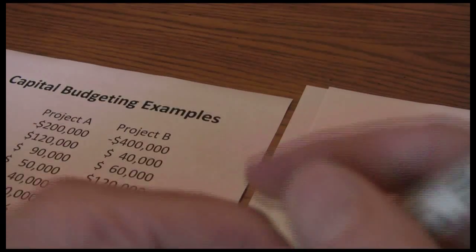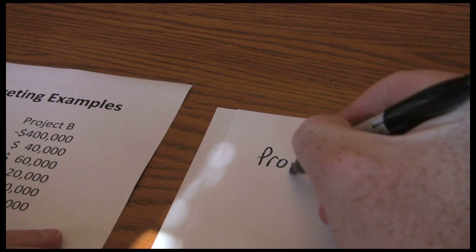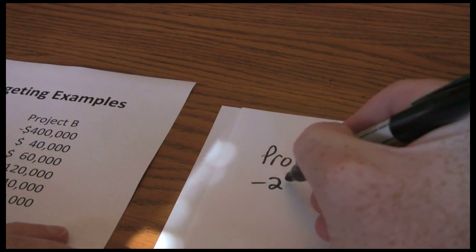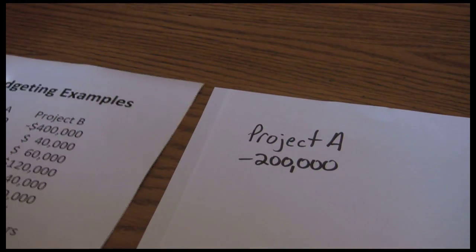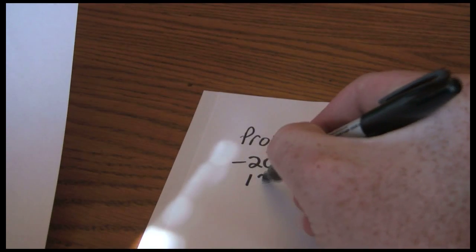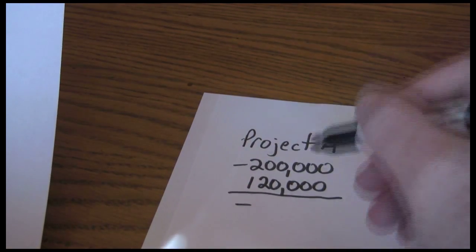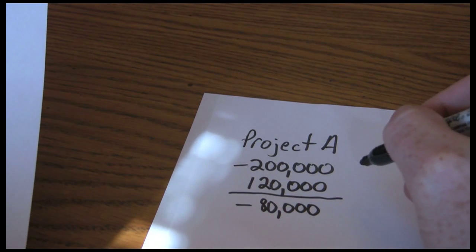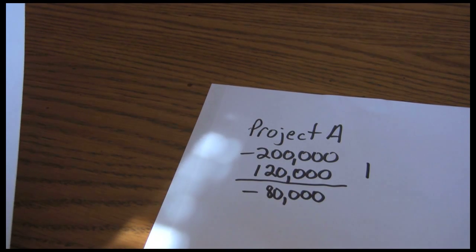So we start out with an initial investment of $200,000 for Project A. So we spend that $200,000. In year one, we earn back $120,000. Now that leaves us with $80,000 yet to pay back. And our count right now is at one. So we've gone one full year, and we have not paid back that initial investment.